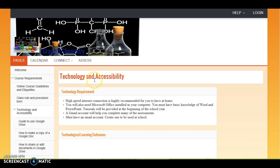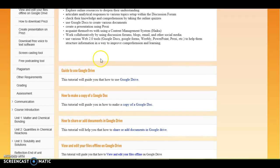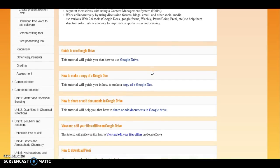The technology and accessibility section includes what you are expected to do while you are online. It includes how to use Google Drive, Google Docs, how to make a copy, share, add or view and edit documents.